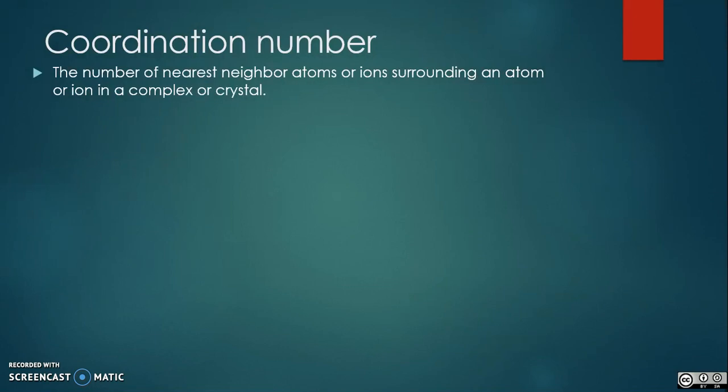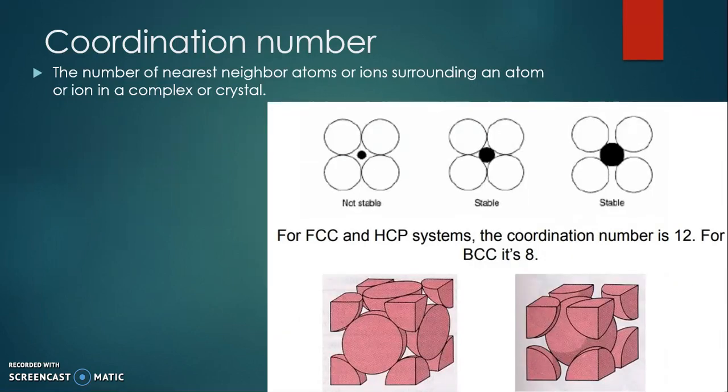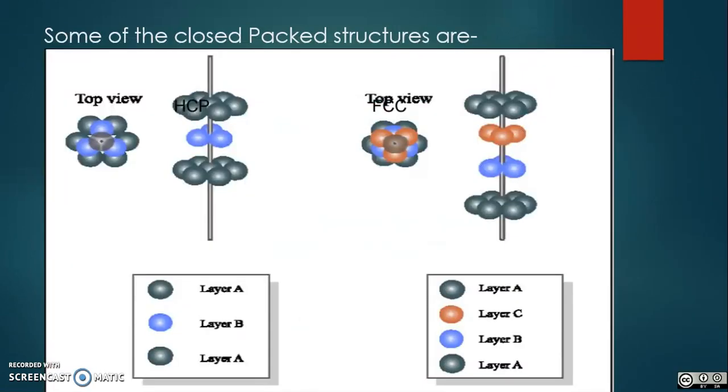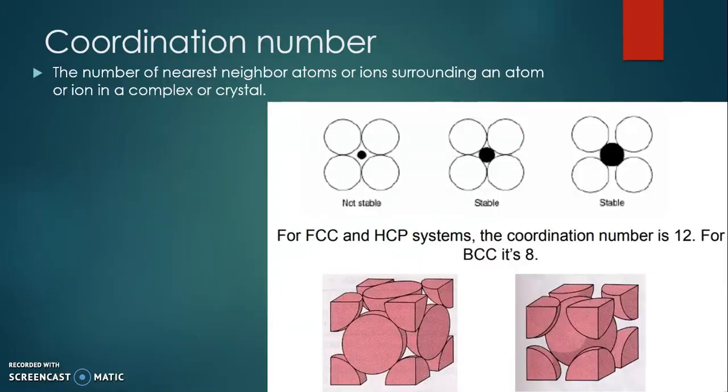There are six nearest neighbors in the same close-packed layer. The HCP structure is very common for elemental metals, and some examples include beryllium, cadmium, magnesium, titanium, zinc, and zirconium.